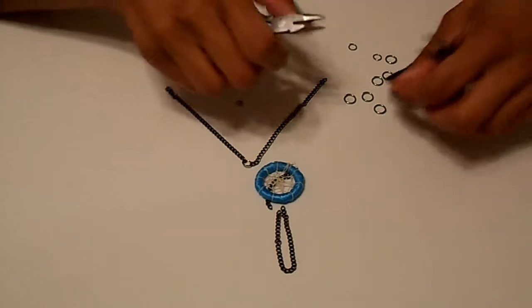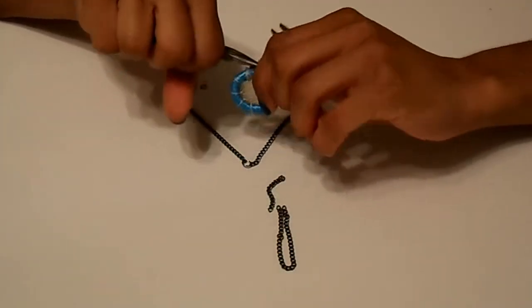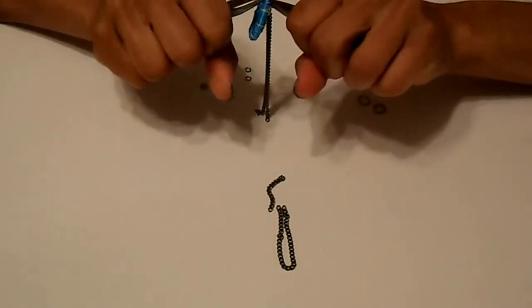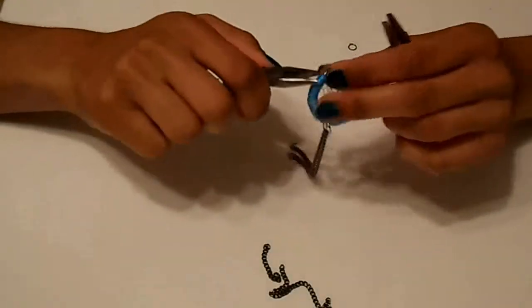I have pre-measured each chain, now all I need to do is attach the jump rings. I started off by adding two large jump rings to the dream catcher and then two smaller rings to that, so that the dream catcher lays flat on the wrist.